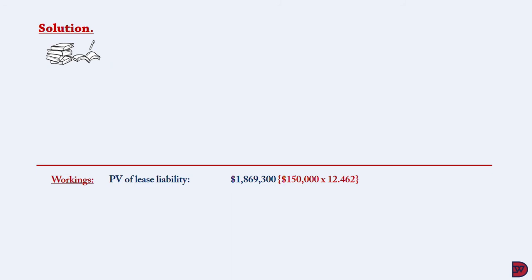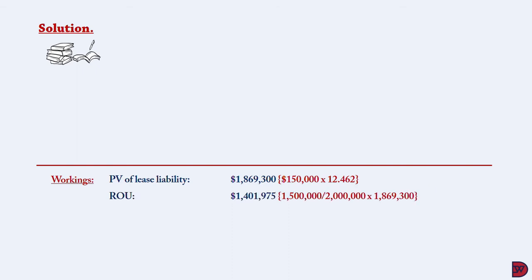Looking at the workings: the present value of the lease liability is $1,869,300, which uses an annuity factor of 12.462 — that is 20 years discounted at 5%, the formula for which is shown on the screen — multiplied by the annual lease payment of $150,000. The right-of-use asset is a proportion of the carrying value to the fair value, multiplied by the lease liability. Carrying value is $1.5 million divided by $2 million, multiplied by $1,869,300, giving $1,401,975.